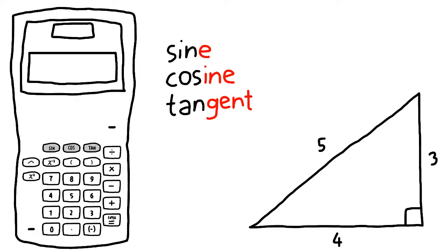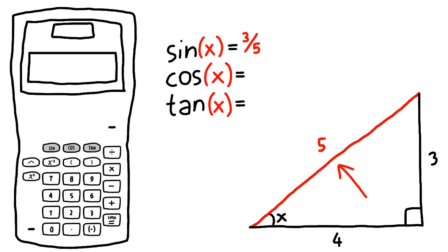If you imagine a right triangle, and one of the acute angles is x degrees, then sine of x is this side over this side, cosine of x is this side over this side, and tangent of x is this side over this side. If you don't understand this yet, you will learn it eventually.